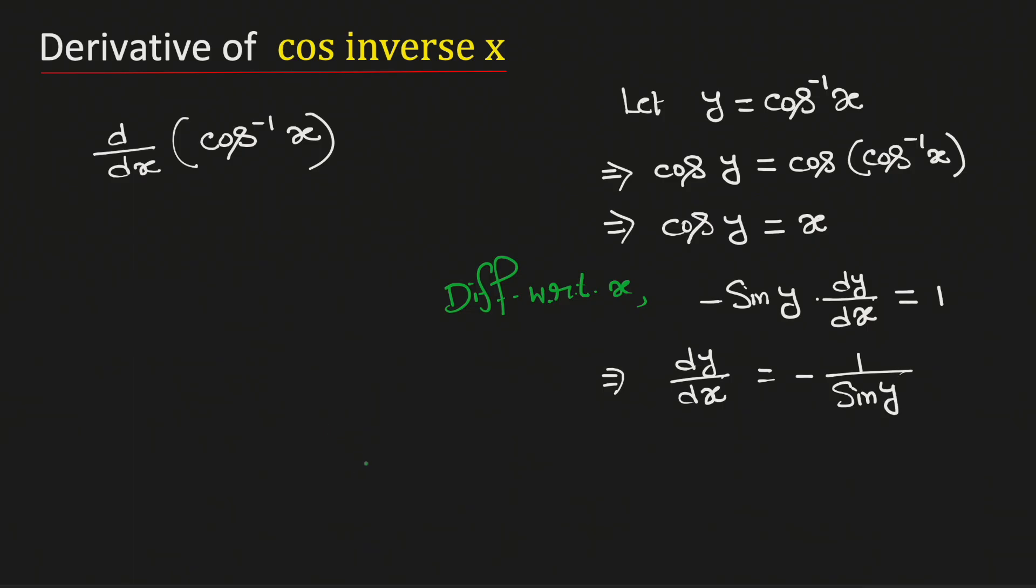Now we know that cos square y plus sine square y is equal to 1. Using this identity we can write sine y as square root of 1 minus cosine square y.